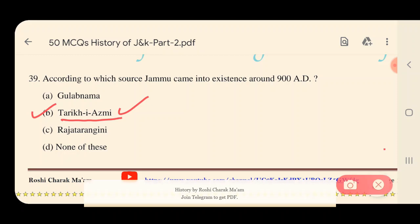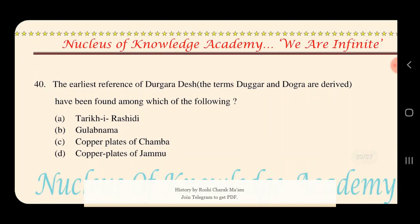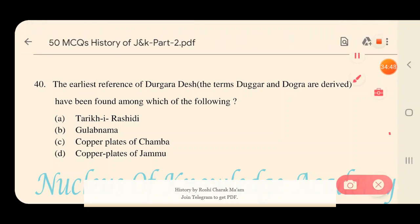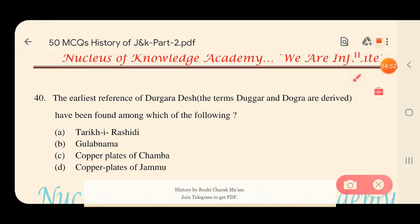Question 40: The earliest reference to Duggar Desh has been found among which of the following? Note: the terms Duggar and Dogra are derived from Duggar Desh. Options: A) Tarikh-i-Rashidi, B) Gulab Nama, C) Copper Plates of Chamba, D) Copper Plates of Jammu. The right answer is option C — the Copper Plates of Chamba. It is in the Copper Plates of Chamba that the name Duggar Desh is found.